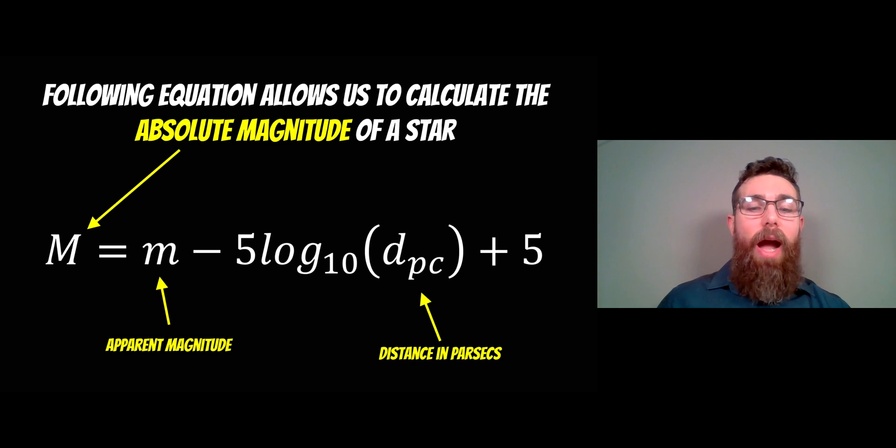So from the apparent magnitude and the distance we can work out an absolute magnitude of a star which is the magnitude from 10 parsecs. So all stars, their absolute magnitude is from the same set distance. We've already taken a measurement for the apparent magnitude, we then need a distance to it in parsecs in order for us to calculate that absolute magnitude.